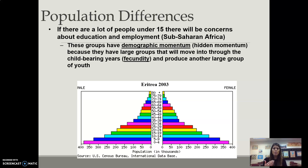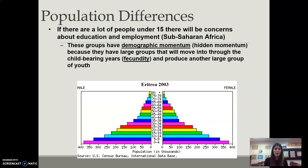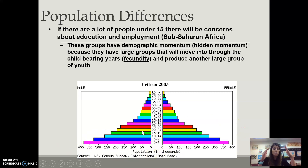If you want to think of demographic momentum, think of riding a bike going down a hill — if you try to slam on your brakes, your body is still going to go forward because you have that momentum. The same applies to demographics: because you have a large number of people moving into their childbearing years, they're still going to be having children, so it will take a while for the population to decline.